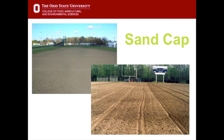Another approach is to put a sand cap on a native soil field — bringing in medium coarse or medium fine sand, spreading it three to six inches deep across the whole field, and either tilling it in or leaving it as a sand cap. Sand caps can be unstable for the same reason a pure sand field would be: without silt and clay or a plastic stabilizer, the sand is too unstable for athletic sports.